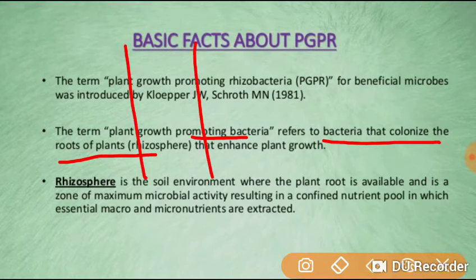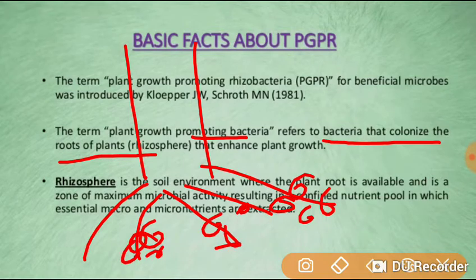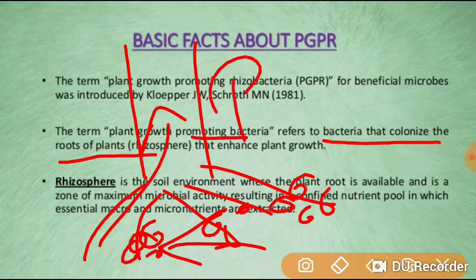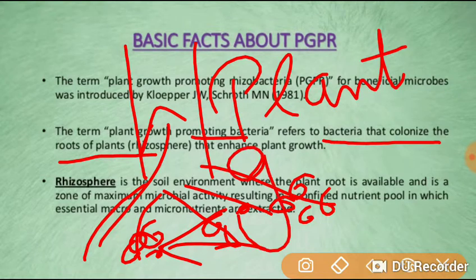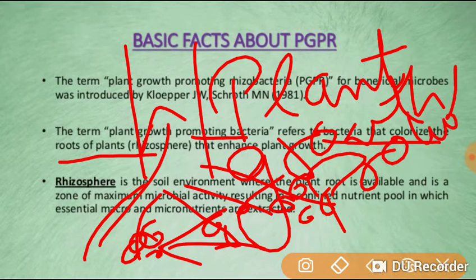This is a plant and its roots. The bacteria will come from the roots of this plant, and from there it will absorb some materials and minerals from the plants. Overall, this bacteria will promote the growth of the plant, and so it is known as plant growth promoting bacteria.